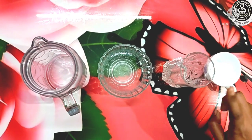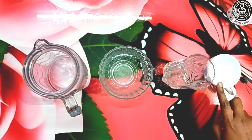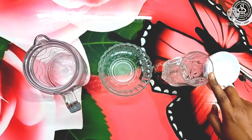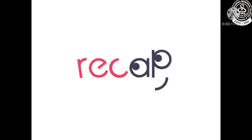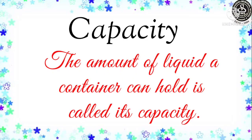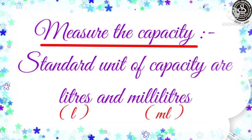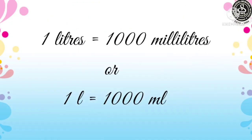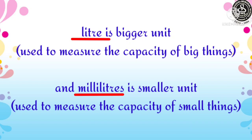Now from the given examples we know that every container has its own capacity, and it might vary depending on the shape and size. Now let us recap. First, we have learned what capacity is — the amount of liquid a container can hold is called its capacity. Then the two standard units of capacity are litres and millilitres. One litre is equal to 1000 millilitres. Litre is the bigger unit and millilitre is the smaller unit.